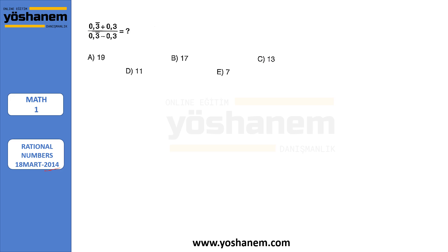And it says 0.3 repeating plus 0.3 divided by 0.3 repeating minus 0.3. So as you know, 0.3 repeating is 3 over 9. Plus 0.3 is 3 over 10 divided by 3 over 9 minus 3 over 10. So I need to get common denominators. That's why I am going to multiply 9 by 10 and 10 by 9. Same in the bottom.